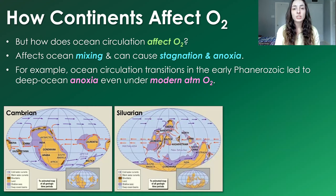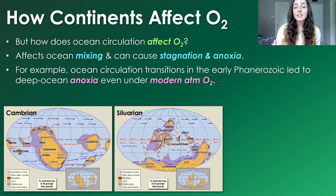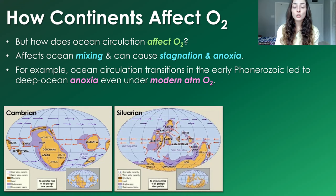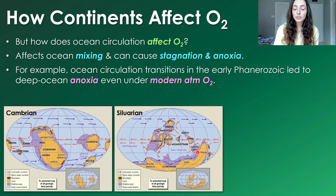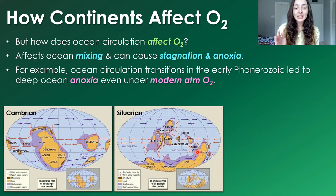An example of ocean circulation changes leading to deep ocean anoxia is seen in the early Phanerozoic throughout the Cambrian, Ordovician, and Silurian — around 500 to 400 million years ago. These instances of deep ocean anoxia are significant because they likely occurred under modern atmospheric oxygen concentrations, suggesting that rather than low atmospheric oxygen causing the anoxia, it was ocean circulation changes due to continental rearrangement. That said, I don't want to claim that modern levels of atmospheric oxygen were definitely present in the early Paleozoic, because we're not sure of that — there are many debated hypotheses here.